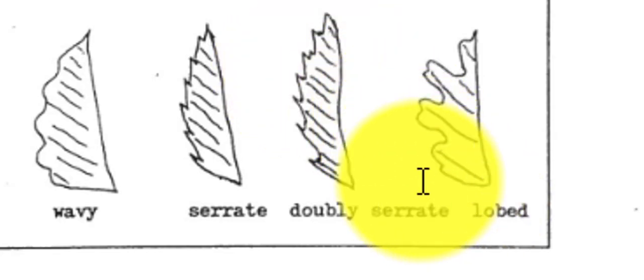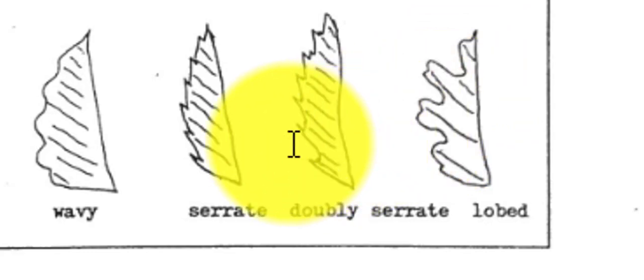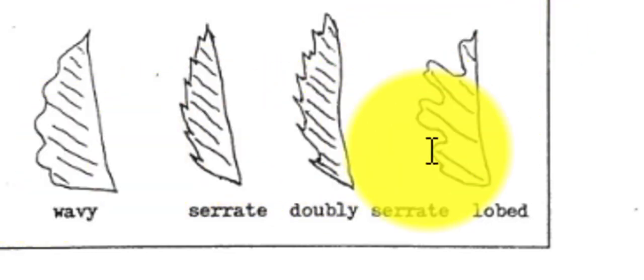And then lobed, here you have the teeth again of the leaf. They're a little bit more rounded off, but in a lobed leaf, those spaces in between the teeth are cut pretty deep. So as you can see, they cut really close to the midrib or deeper towards the midrib than any of these edges do here. So that would make it lobed.